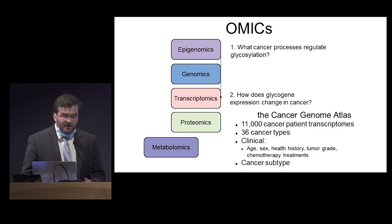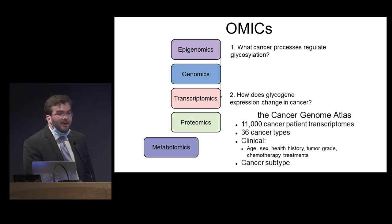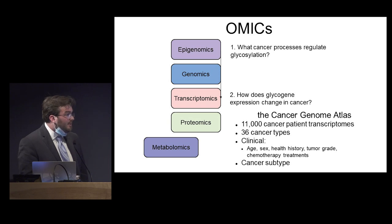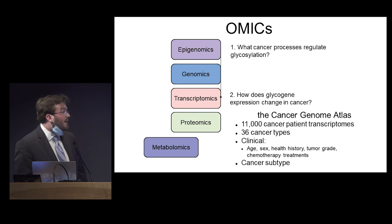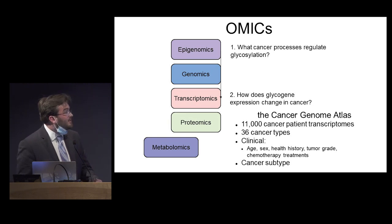In order to help us do this, we have this enormous dataset called the Cancer Genome Atlas, which is a compendium of over 11,000 cancer patient transcriptomes measuring how much genes change across 36 different cancer types. Associated with this is clinical metadata such as age, sex of the patient, health history, tumor grade, chemotherapy treatments, as well as cancer molecular subtypes. This dataset will help us understand how glycosylation is systemically dysregulated amongst many different cancer types.